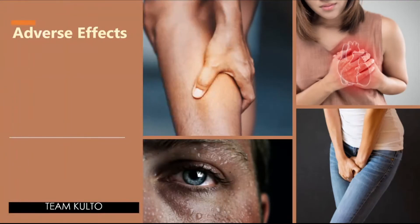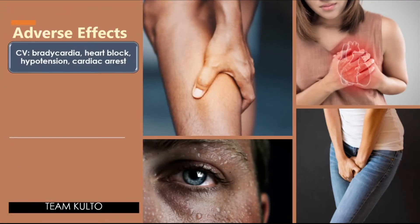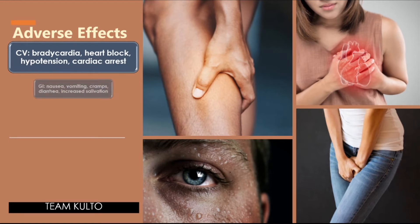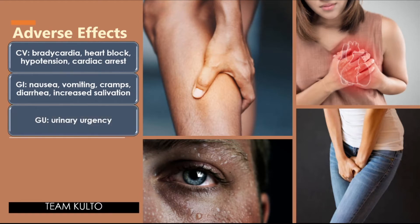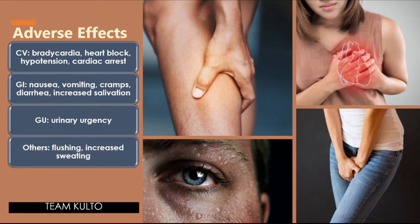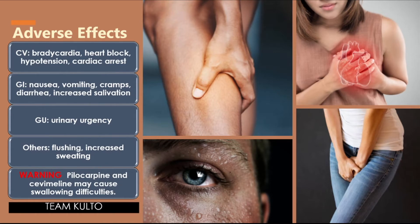Adverse effects of direct acting cholinergic agonists: cardiovascular — bradycardia, heart block, hypotension, cardiac arrest. GI — nausea, vomiting, cramps, diarrhea, increased salivation. GU — urinary urgency. Others — flushing, increased sweating. Warning: pilocarpine and cevimeline may cause swallowing difficulties or dysphagia.